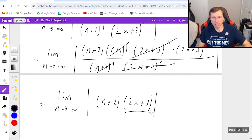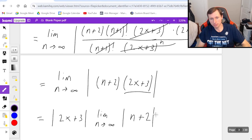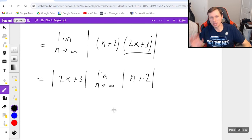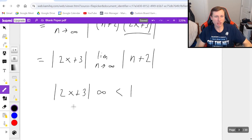Once again I'm going to pull the x part out in front while keeping it in the absolute value. And then limit n goes to infinity of absolute value of n plus two. As you can see here now we get the opposite result where this is equal to infinity. So we have two x plus three times infinity. That has to be less than one. And obviously that's never going to happen except for one point. And that point is when this equals zero.